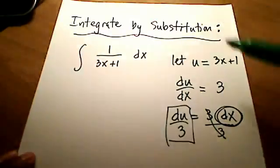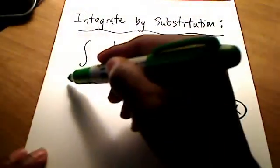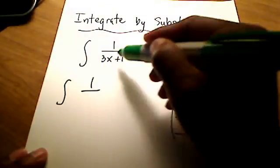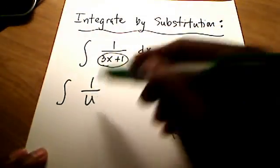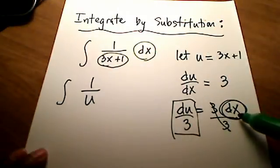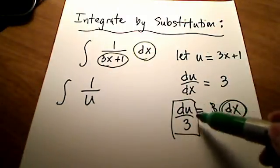Let's rewrite our original integrand. I've got the integral of 1 over u - the denominator is replaced with u. In place of dx, we're substituting du/3.